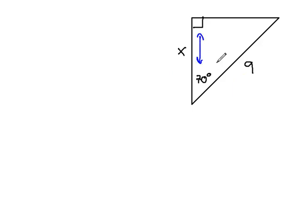The x is between the right angle and the 70 degrees. That makes it the adjacent side. And the 9 is the long side across from the right angle. That makes it the hypotenuse.